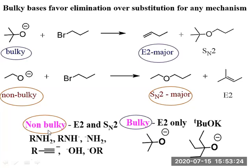The size of the base or nucleophile plays an important role. Non-bulky groups include primary, secondary, tertiary amines, ammonia, OH⁻, OR⁻, and halides — for these, both E2 and SN2 are possible. Bulky groups include tertiary butoxide, neopentyl pentoxide, and related ions; these act as bases and always favor E2 elimination. With non-bulky groups, both outcomes are possible and one will be major, the other minor, depending on other reaction conditions.